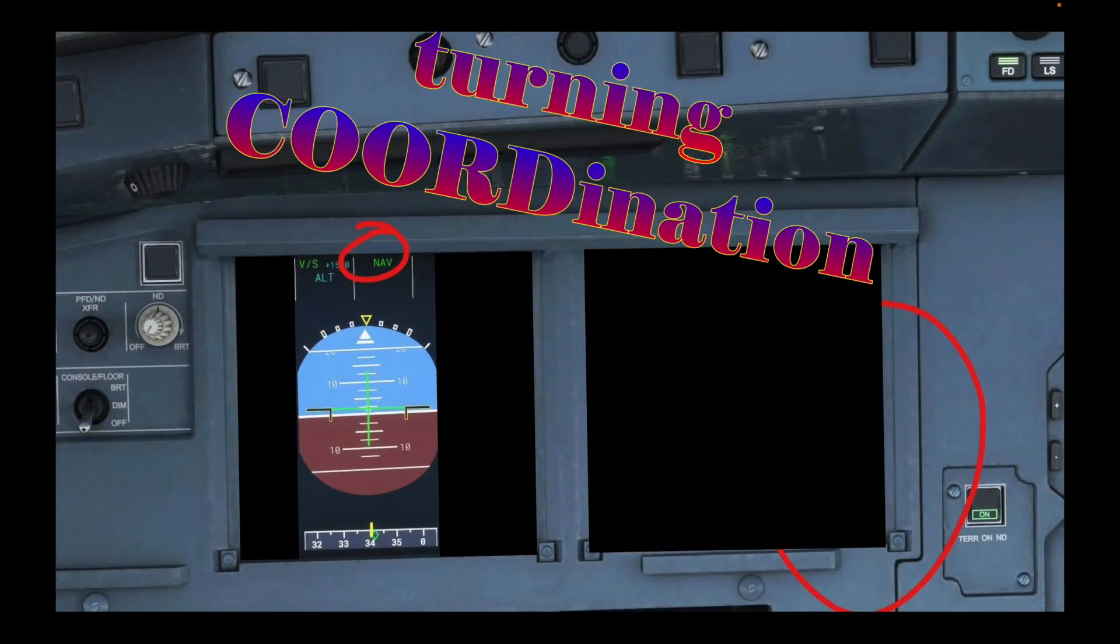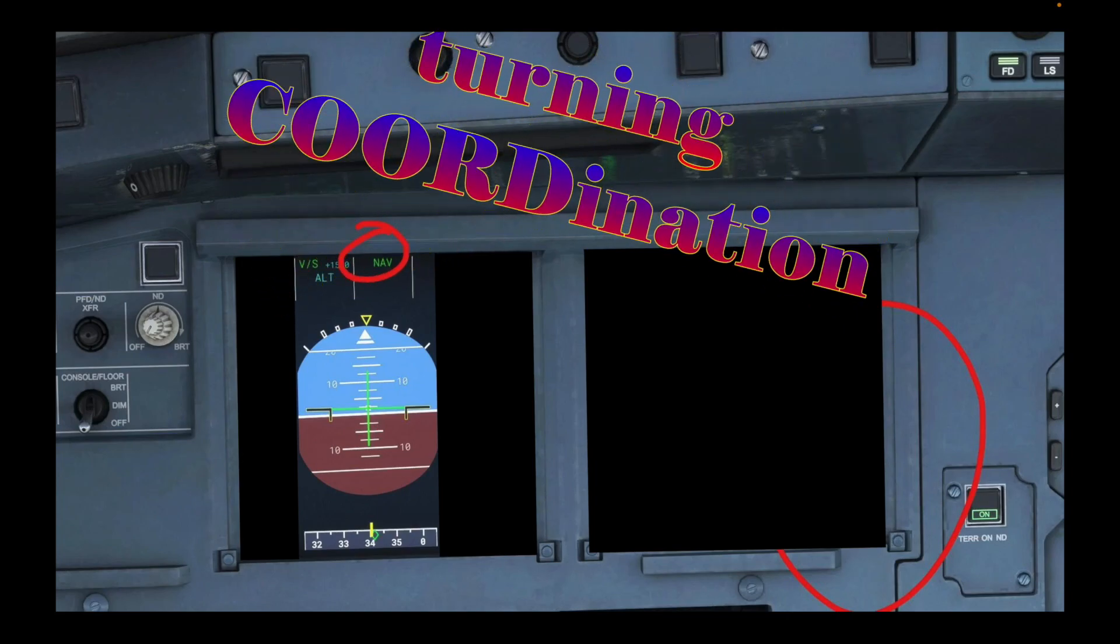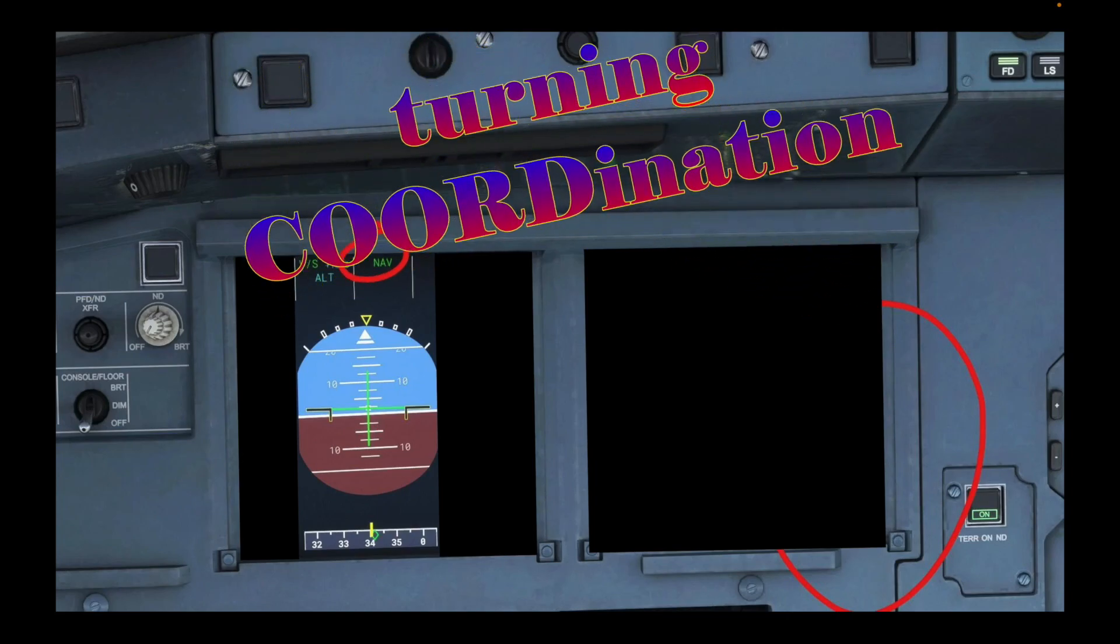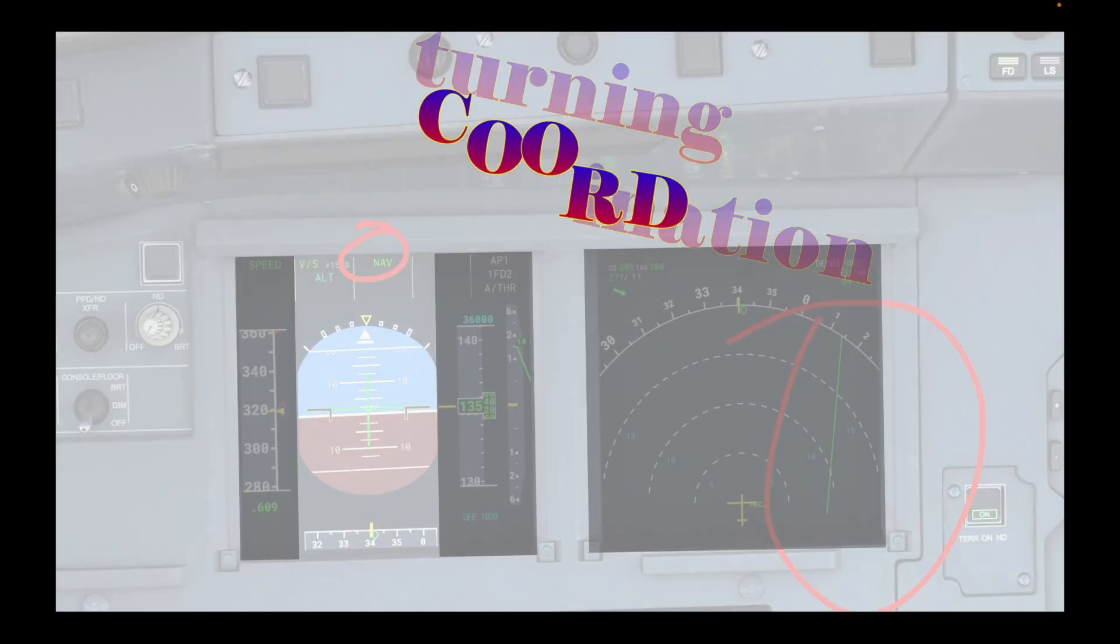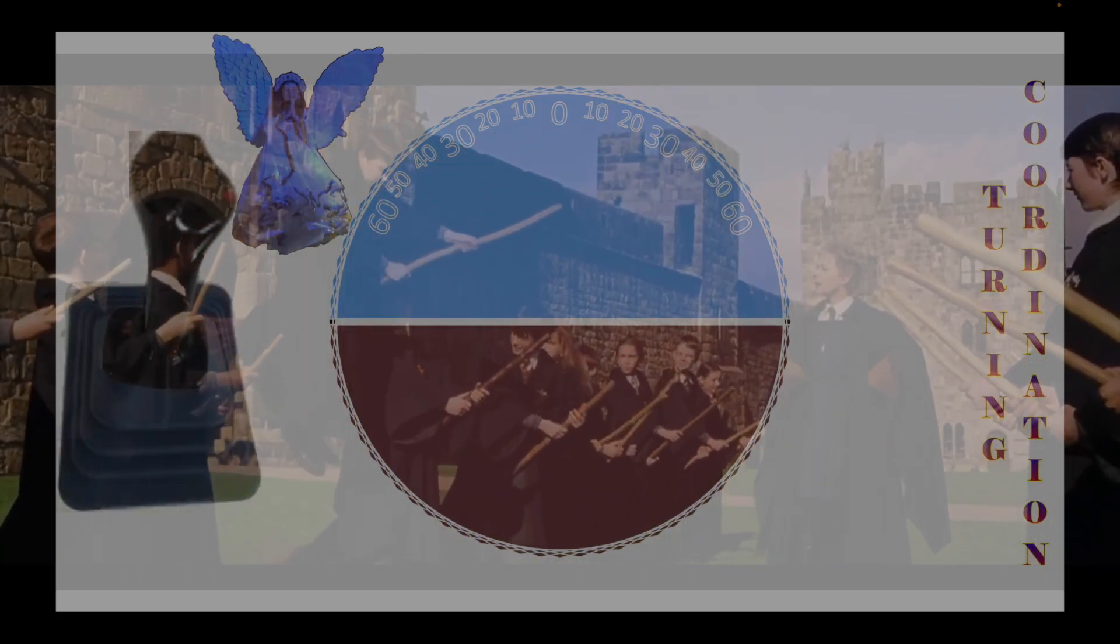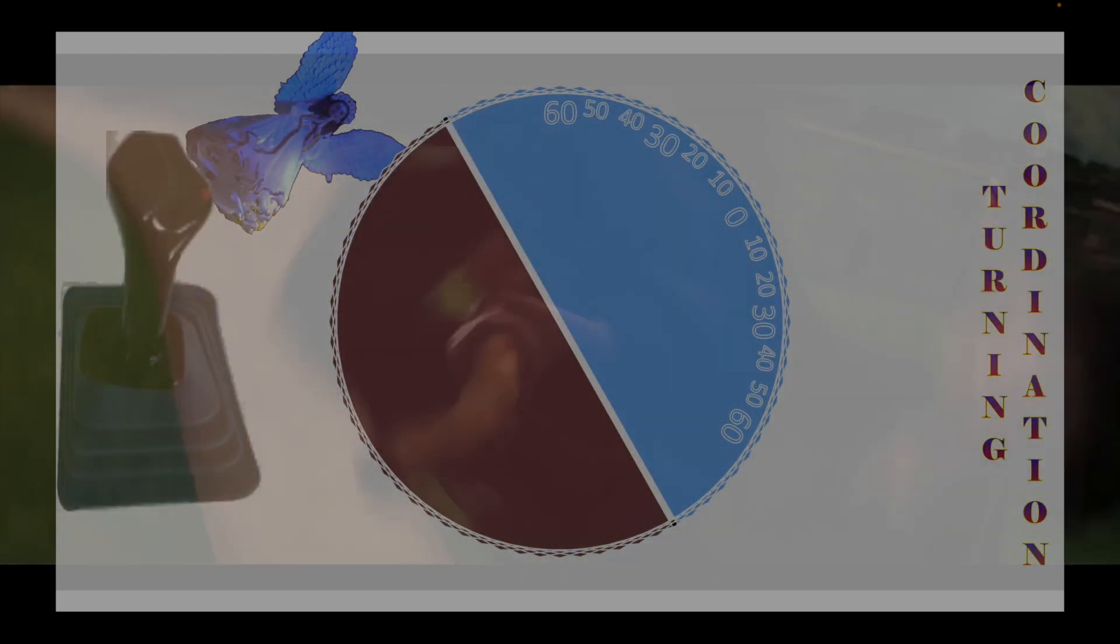The third flight instrument we will be discussing right now is the turning coordinator. Is my turn coordinated? This flight instrument helps guide the pilot through a turn. It uses a gyroscope to show the rate and direction of turn and whether the airplane is slipping forward to the inside or skidding towards the outside of the turn.